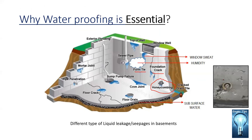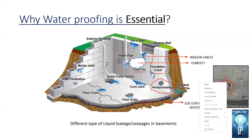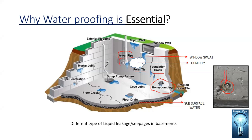Form ties are the ties fixed on the formwork. Water can also come through rebar penetrations and sewer pipelines — if pipes are not correctly affixed to the wall or pipe collars are not properly fixed. Water also enters through window wells, tops of walls, exterior flooding, construction joints, pipe penetrations, and floor cracks.